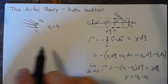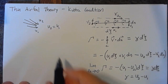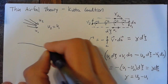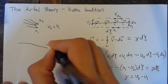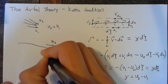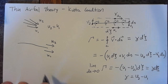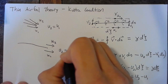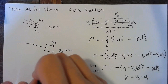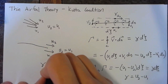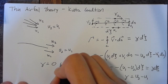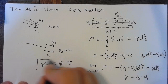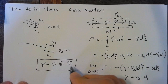Relating this back to the Kutta condition, we'll look again at the trailing edge and say that there's some U2 on the top and some U1 on the bottom. If U2 is equal to U1, this means that gamma is equal to 0 at the trailing edge. And this right here is the statement of the Kutta condition.